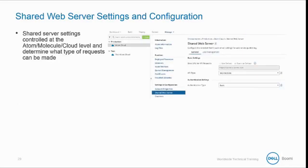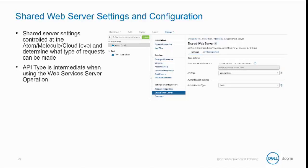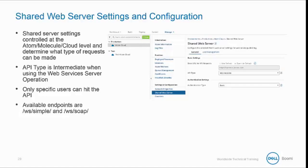Shared Web Server settings are controlled at the Atom, Molecule, or Cloud level under Atom Management, and these settings determine what type of requests can be made. The API type must be set to Intermediate when using the Web Services Server operation. With the API type set to Intermediate, only specific users can hit the API. The available endpoints are shown here.